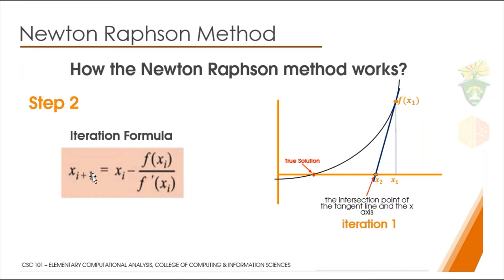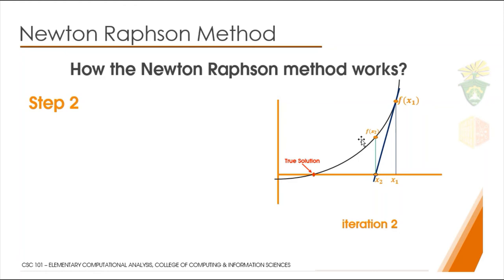Once you get x₂, we will then repeat the process. Again, find f(x₂), get the tangent line, and then where it crosses, x₃ is the next x. Again, find f(x₃), get the tangent line, and where it crosses, x₄ is the next x. We will repeat that again and again until we get closer to the true solution.